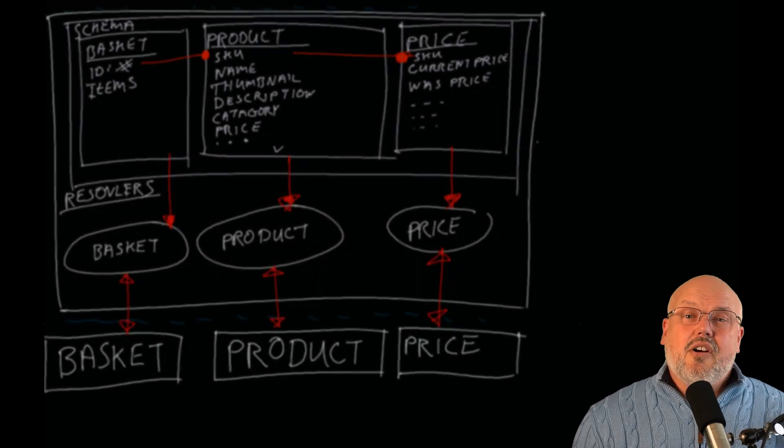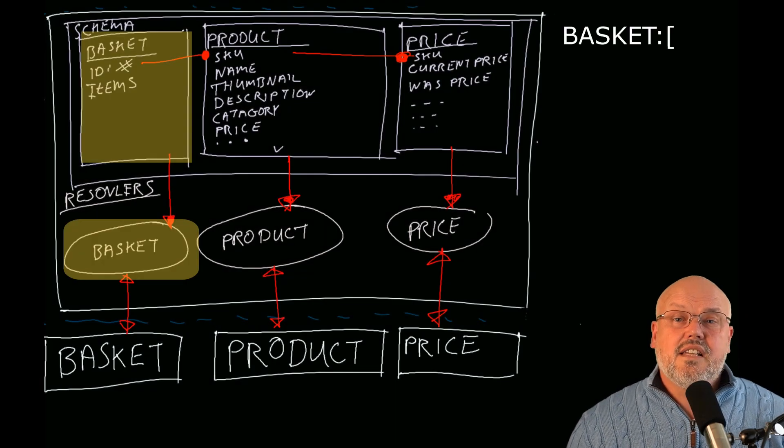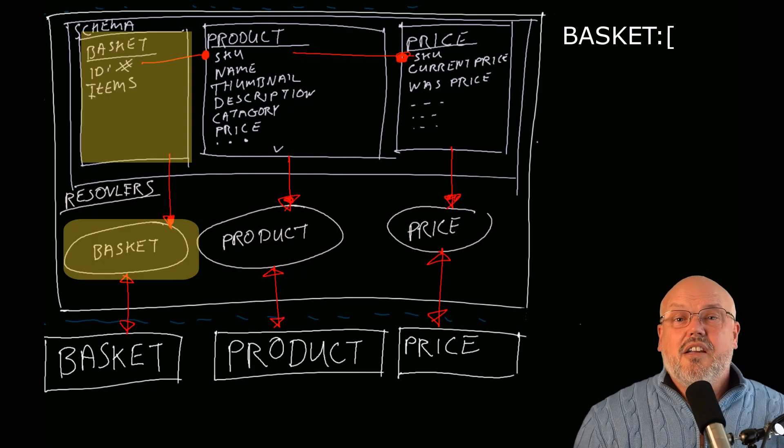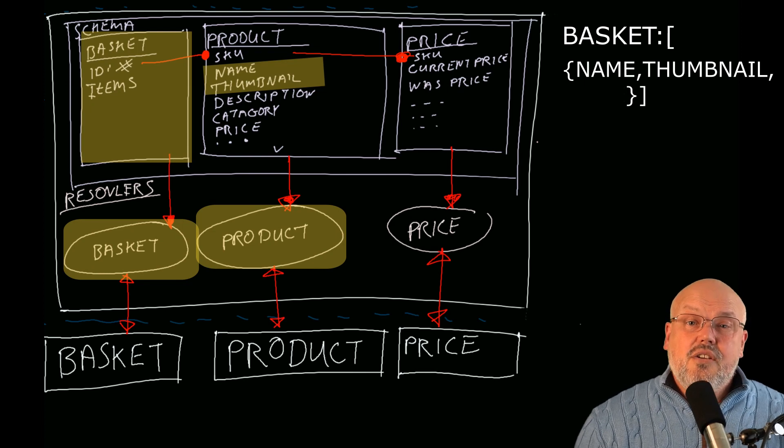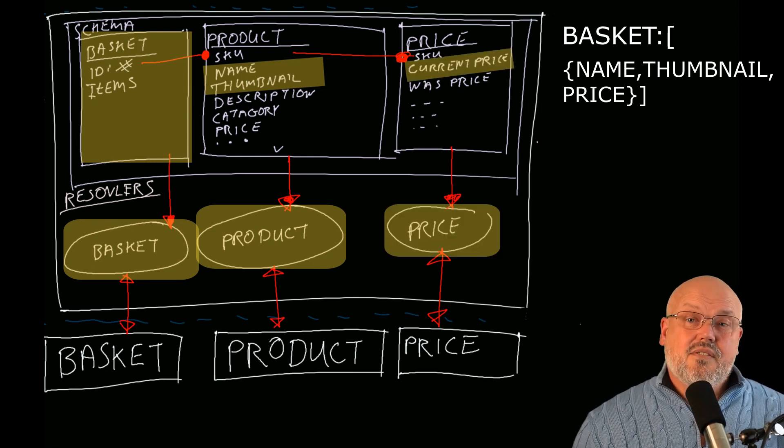When you request data from GraphQL, it will make all the underlying API calls it needs to complete the data model using its resolvers — which solves the problem of underfetching. On top of that, you can make multiple queries in GraphQL, reducing the overall chattiness associated with REST-based microservices.